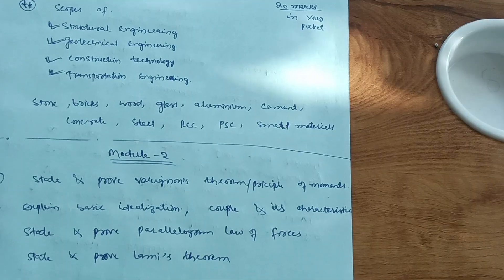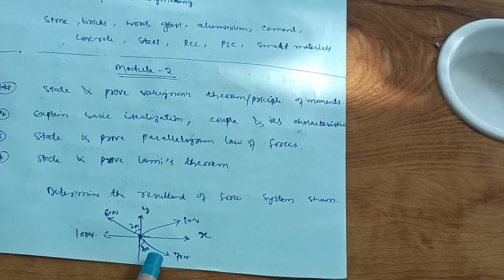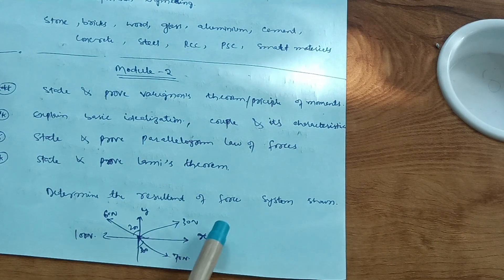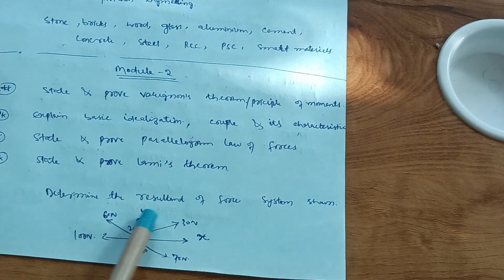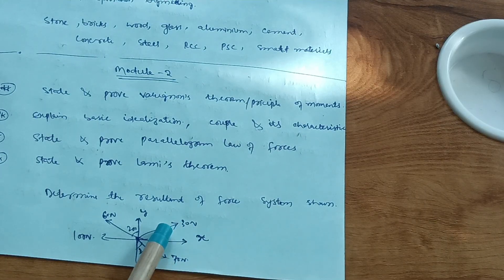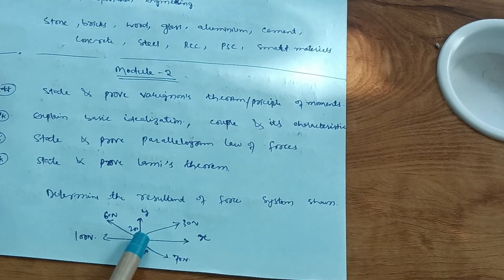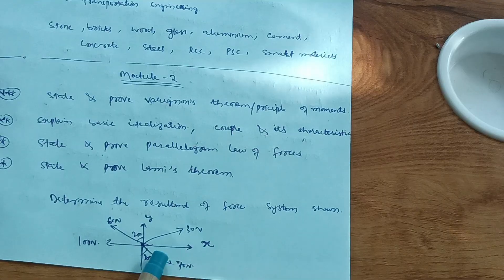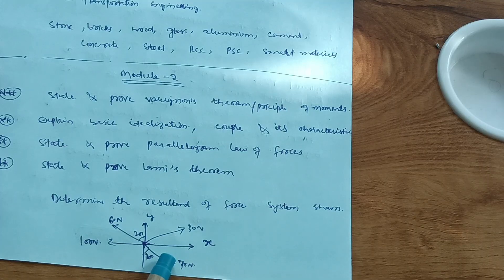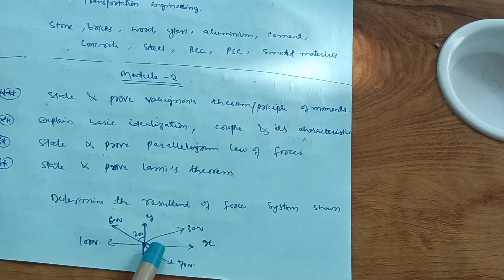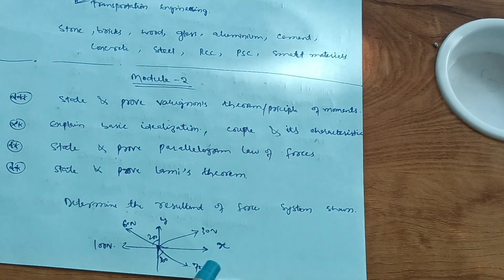Next one is determine the resultant of force system shown in figure, like 30 newton, 60, 70, 100, whatever it may be. You have to determine the resultant of forces. These are simpler questions my dear friends, so don't leave these variety of questions. If you find some difficulty, let me know, comment down. I can make separate videos on this problem so you will not leave these seven marks.